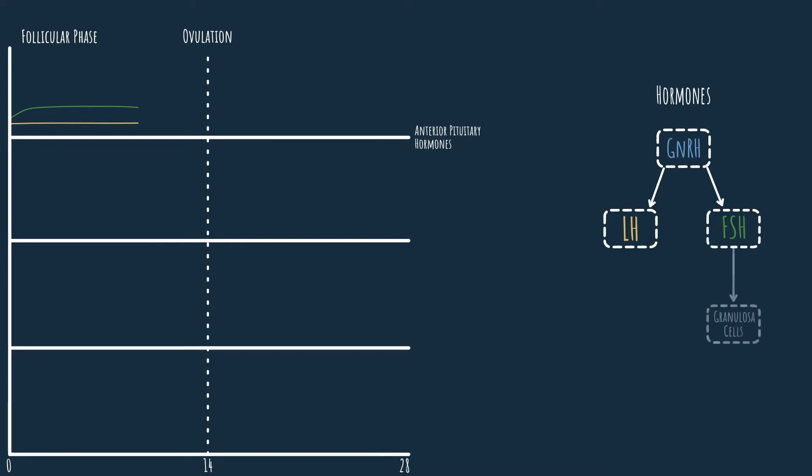FSH, as we've mentioned in the last video, stimulates the maturation of the follicles. So under the influence of FSH, follicles can mature and grow larger and larger as we can see on the graph. As part of the maturation process, the follicles develop a layer called theca interna. And this is where the luteinizing hormone comes in.